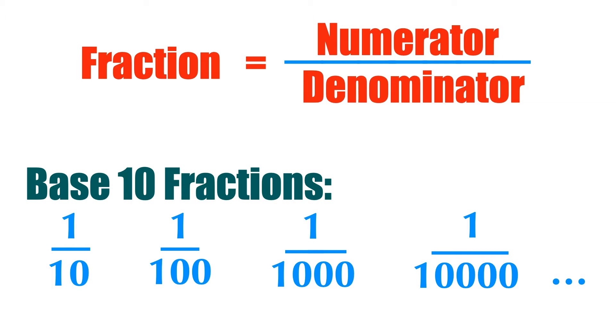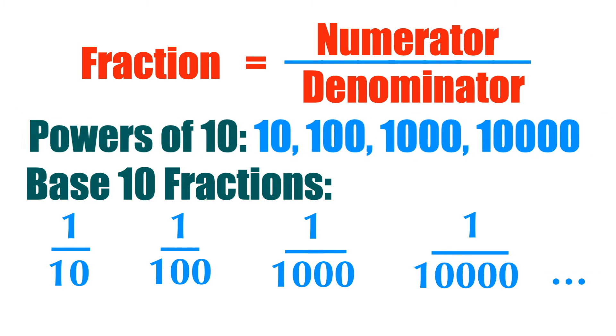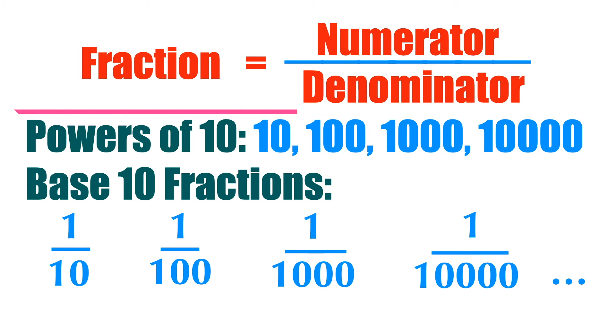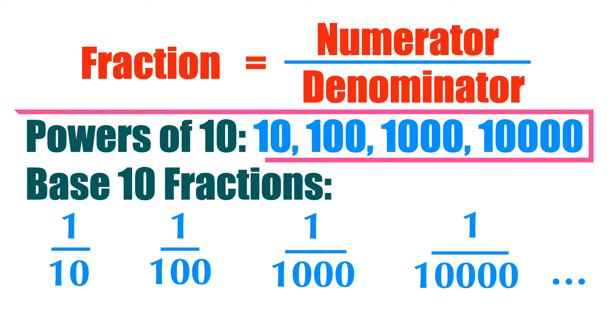Base 10 fractions are fractions with the denominator — the bottom part of the fraction — being all powers of 10, like 10, 100, 1000, 10,000, and so on.